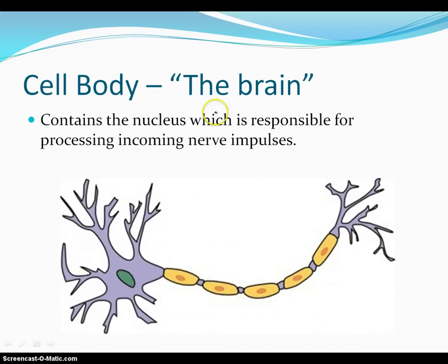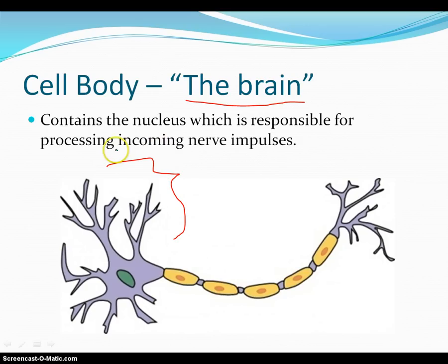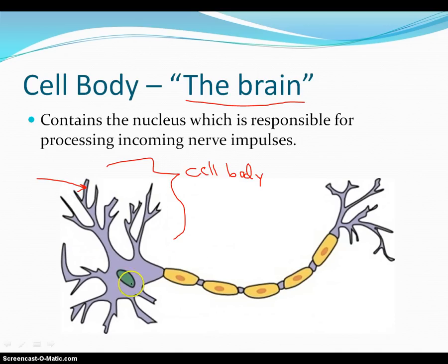The first part I want to talk about is the cell body. You can think of that sort of like the brain of the neuron — it controls the neuron. It contains a nucleus and is responsible for processing incoming nerve impulses. All of this right here is part of the cell body, and it is responsible for taking in impulses and deciding what to do. If we decide that we want to keep the nerve impulse flowing, we're going to shoot it out the back over here.